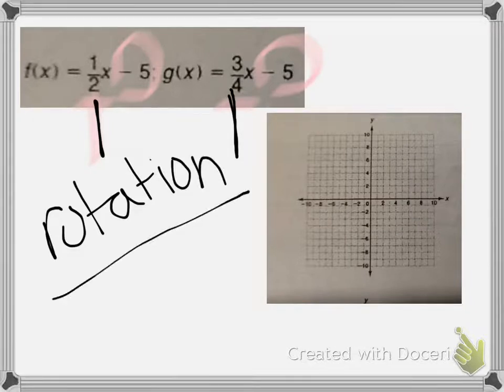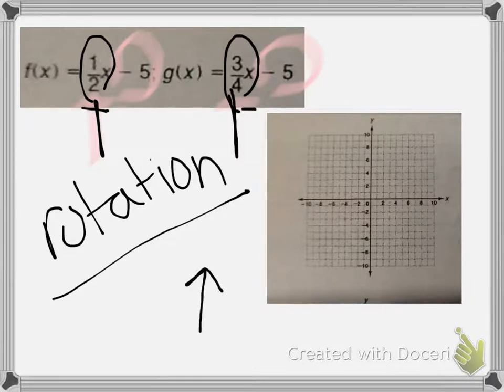Without even graphing it, I can tell that it's a rotation because all they changed was the slopes. I went from 1 half to 3 fourths, so that means my slope got bigger, which means my line is going to get steeper. If I have 1 half x minus 5, it's going to cross through and be approximately like that. And then 3 fourths is going to be a little bit taller, so it would be more like approximately like that. They aren't going to change much because I only went from 1 half to 3 fourths. I only increased it by a quarter.